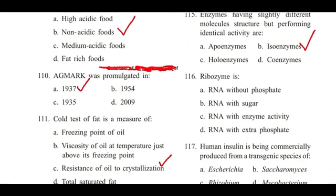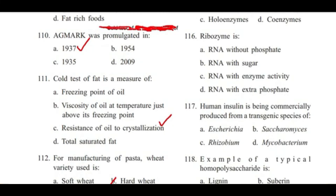Question 116: Ribozyme is — RNA without phosphate, RNA with sugar, RNA with enzyme activity, or RNA with extra phosphate? Answer is C, RNA with enzyme activity.